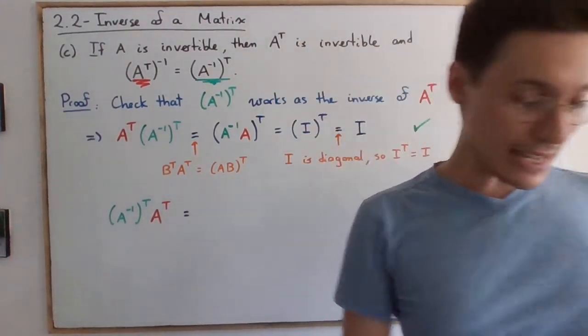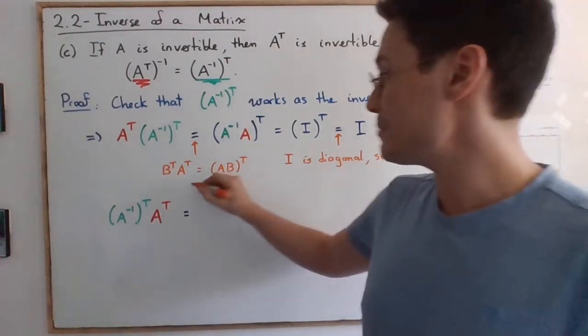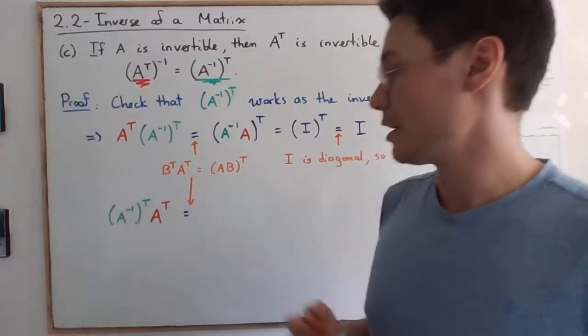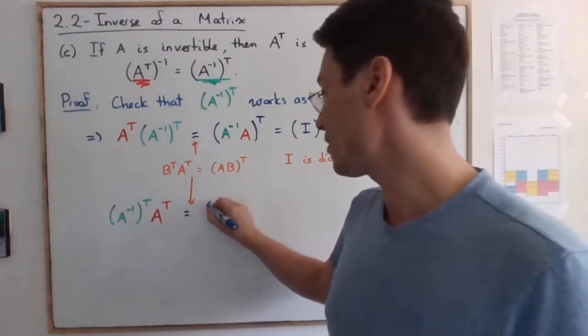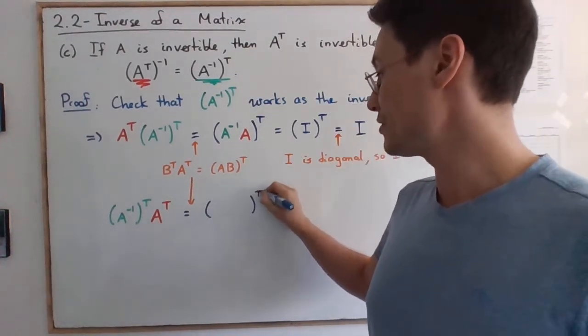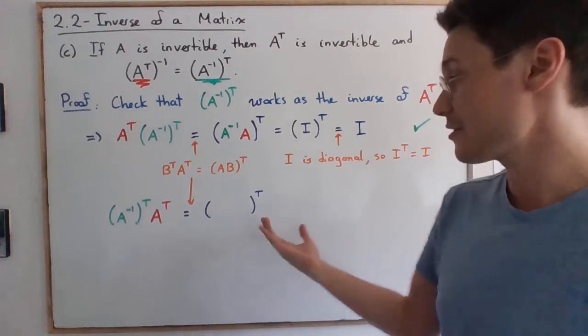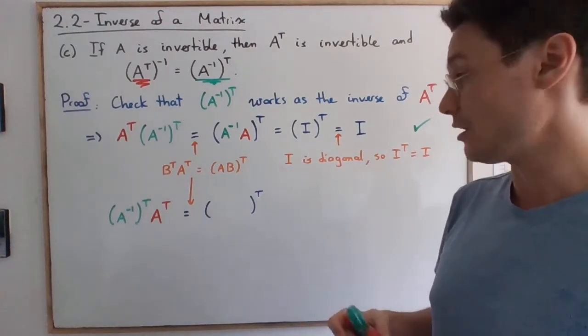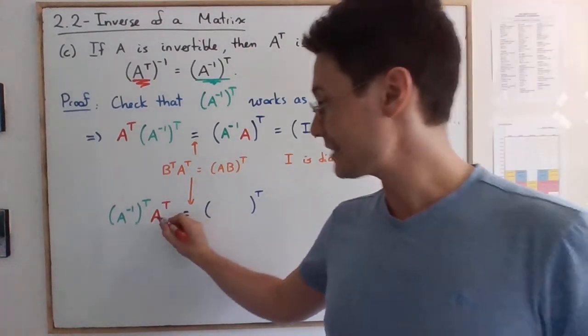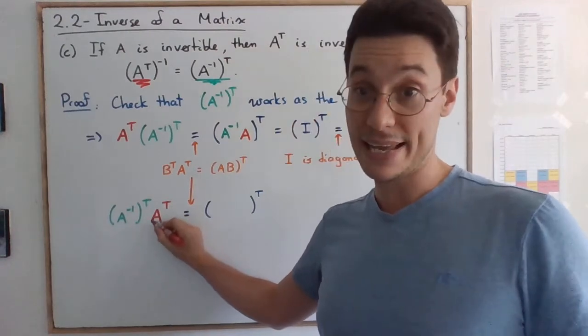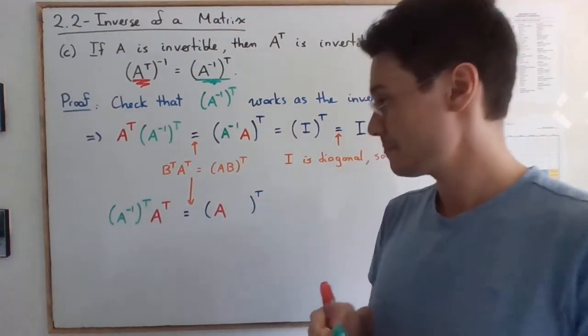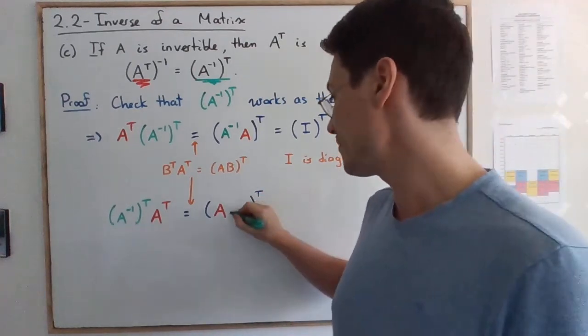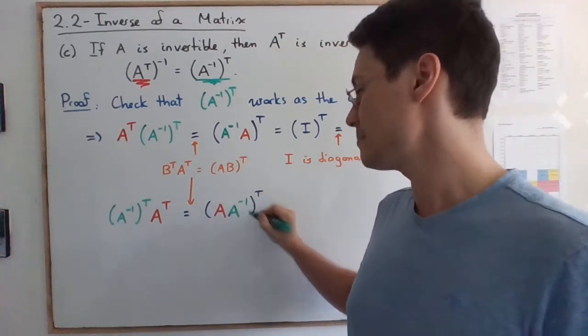So as you can see, we're using the exact same property. Again, I'll be careful with my color coding. I'll put the matrices together and transpose the result. But now notice that the red matrix is on the right, so it becomes on the left. And the A^-1, which is on the left, becomes on the right.